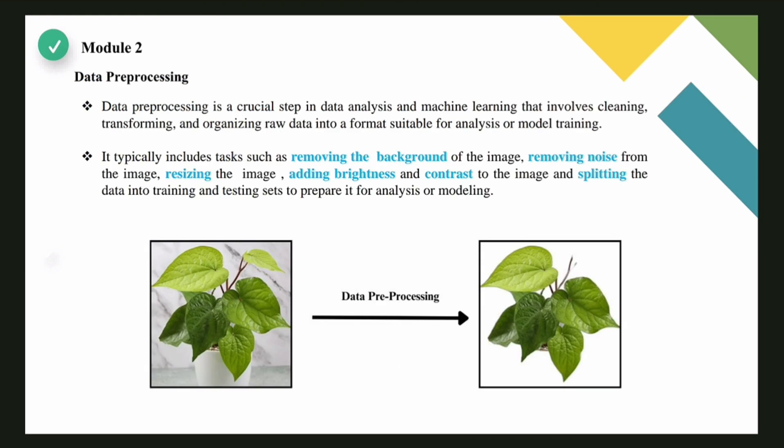Module 2 involves pre-processing of data. Data pre-processing is vital in data analysis and machine learning, encompassing cleaning, transforming, and organizing raw data. Tasks like removing image backgrounds, eliminating noise, resizing, adjusting brightness and contrast, along with splitting data into training and testing sets, are standard steps. This process readies the data for effective analysis or model training. The example shown can be analyzed with the process of before and after pre-processing — the image of the leaves with the background is captured, and after pre-processing, the background of the image is removed.